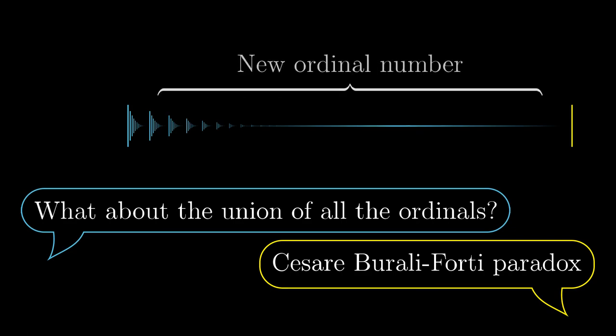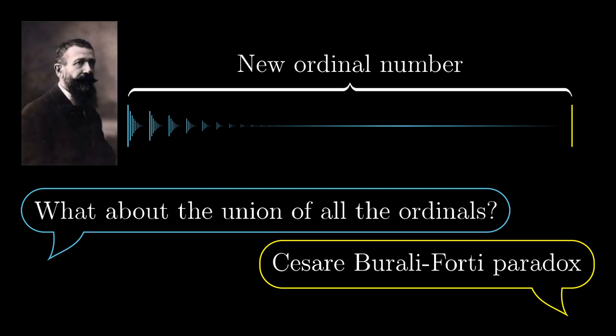If we add one next bar to this super large union, we obtain a new ordinal number which is necessarily longer than all the possible ordinal numbers. That doesn't make sense. This problem is named after Italian mathematician Cesare Burali-Forti and it was the first sign that there is something wrong with naive set theory.